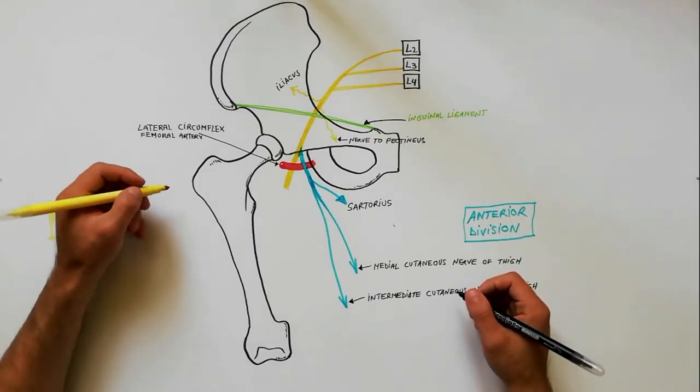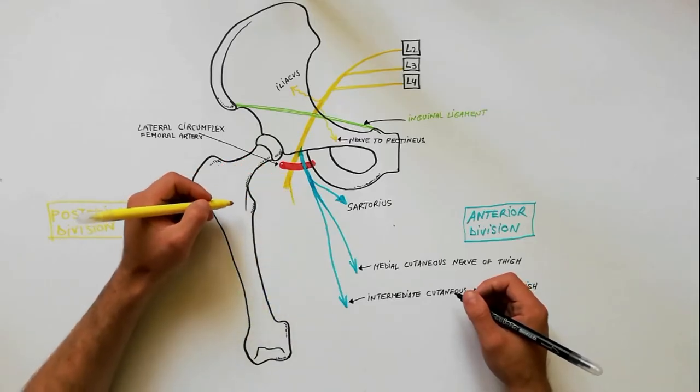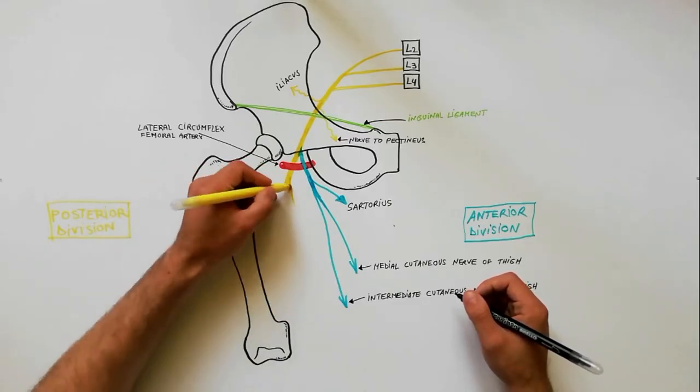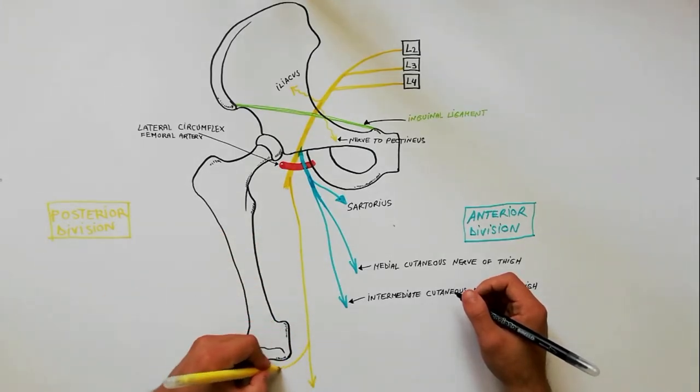The posterior division gives off one cutaneous branch, the saphenous nerve, and four muscular branches to supply the quadriceps femoris.